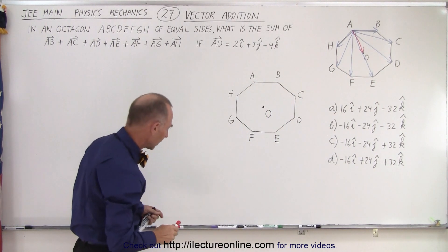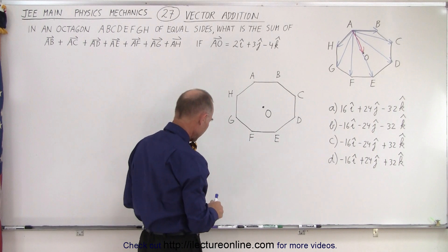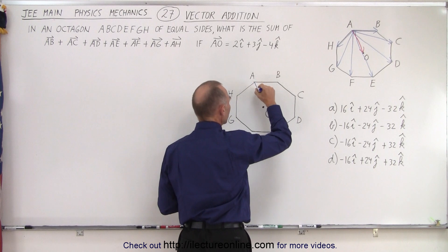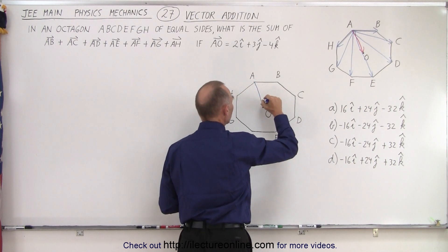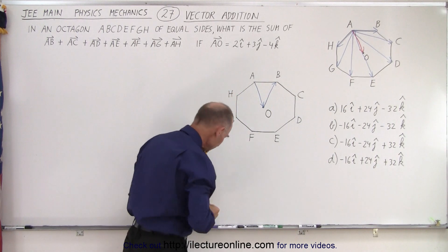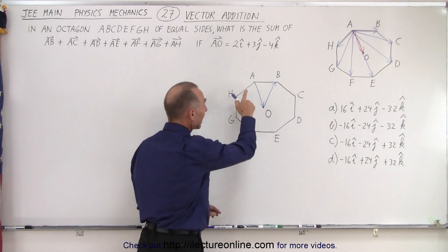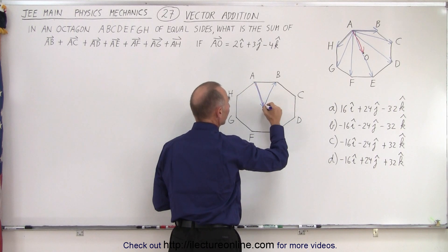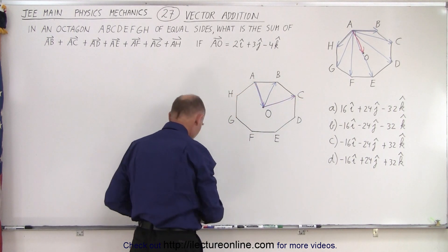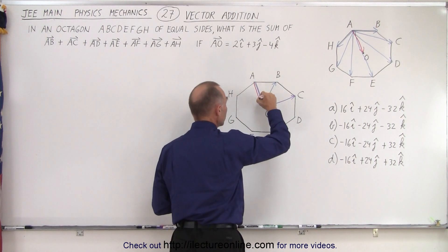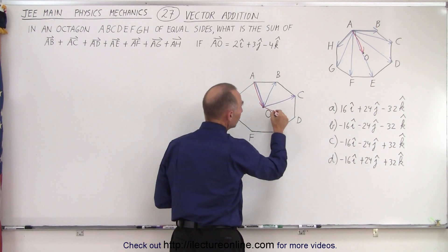Until you begin to realize that, wait a minute, I can represent the vector from A to B as a vector from A to O added to a vector from O to B. And then, I can represent the vector from A to C as a vector from A to O, and a vector from O to C. And then, I can take the vector from A to D, and represent it from A to O, and then from O to D.